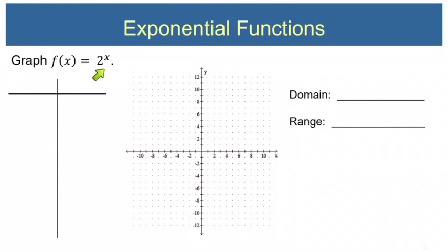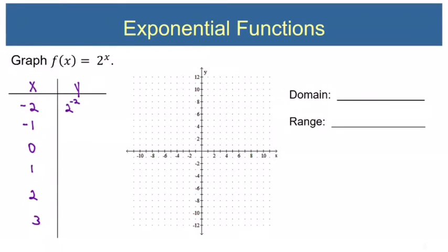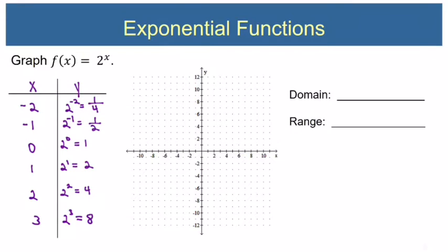Now let's look at the graph of f(x) = 2^x. We'll make an xy table, choosing x values from -2 to 3. Plugging in -2 gives 2^(-2) = 1/4. Plugging in -1 gives 2^(-1) = 1/2. Plugging in 0 gives 2^0 = 1. Plugging in 1 gives 2^1 = 2. Plugging in 2 gives 2^2 = 4. And plugging in 3 gives 2^3 = 8.